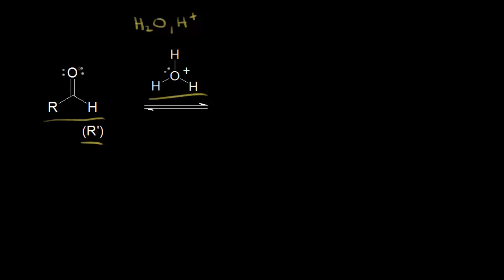In an acid-catalyzed reaction, the first thing that's going to happen is protonation of your carbonyl oxygen. A lone pair of electrons on your oxygen is going to pick up a proton from hydronium, leaving those electrons behind. We're going to protonate the carbonyl oxygen, giving it a plus one formal charge. Our carbon is still bonded to an R group and a hydrogen.